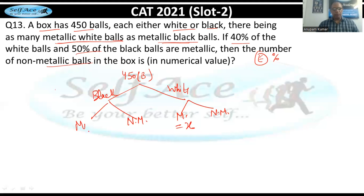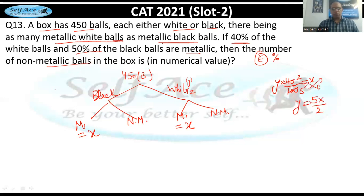Let metallic white balls = x. Since 40% of white balls are metallic, we have 40% of total white = x, so total white balls = 5x/2. Similarly, 50% of black balls are metallic, so if metallic black = x, total black balls = 2x.